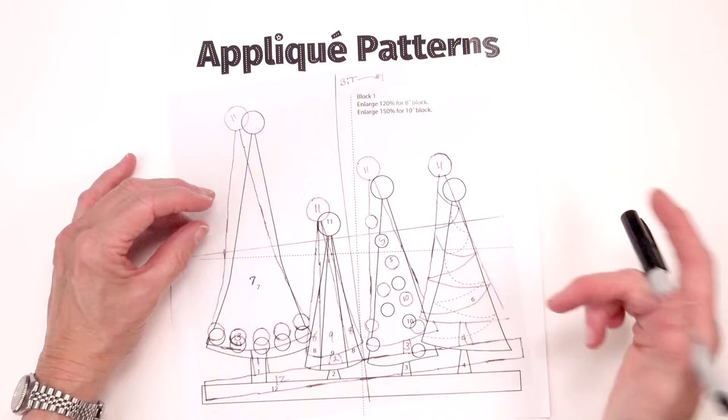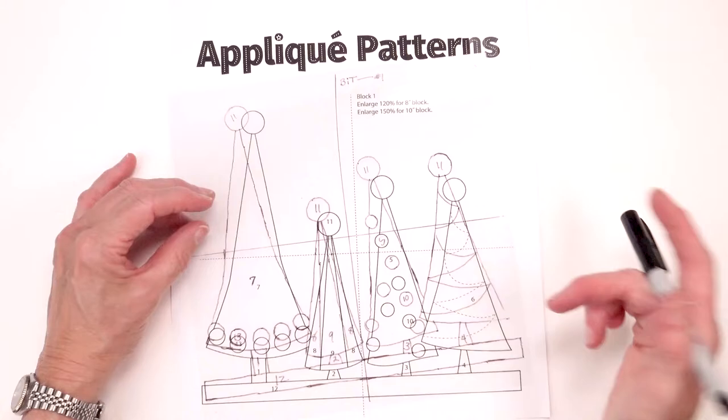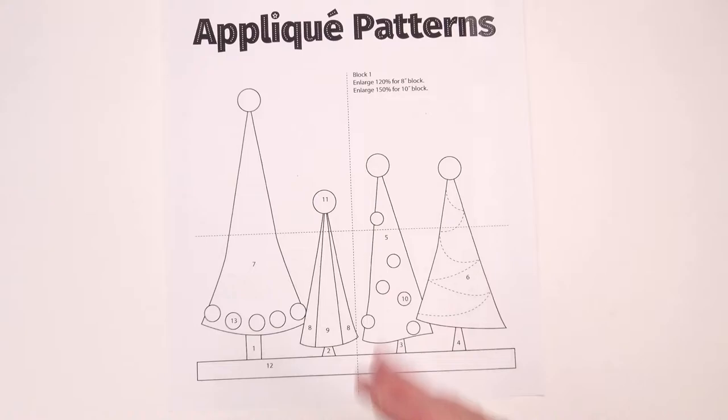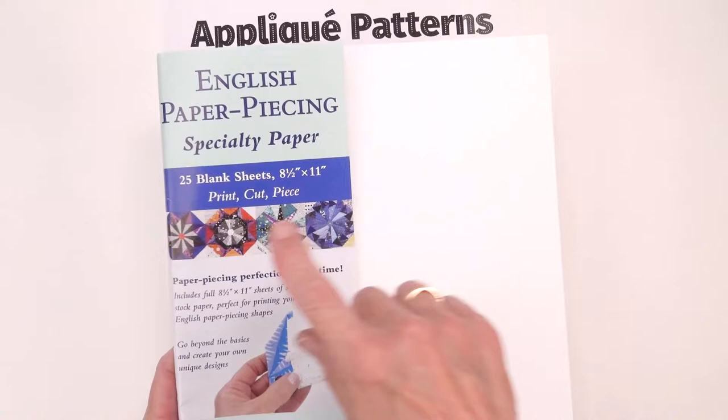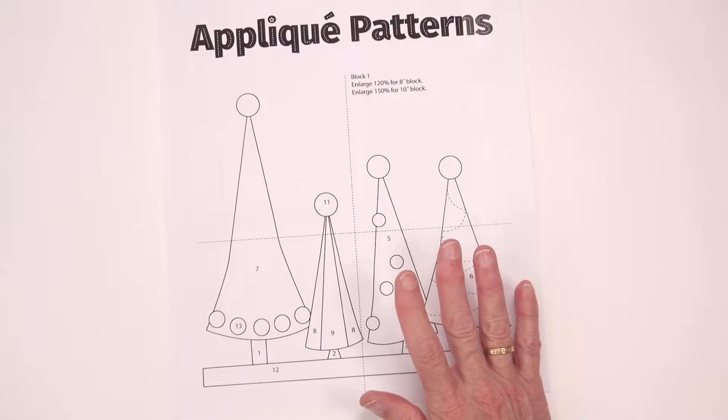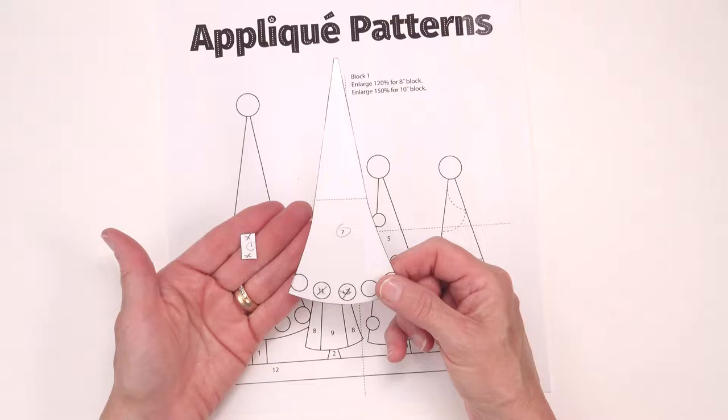I drew mine on the clear vinyl that comes from C&T and I used an ultra fine point sharpie marker. The other thing to already have made are the templates that you'll be using. I explain in the book how to copy the pattern onto either plain paper or the English paper piecing paper which is a really nice cardstock. I cover the templates with a peel and stick laminate. It's available at office supply stores. I make the templates and cut them out. Templates are finished size.